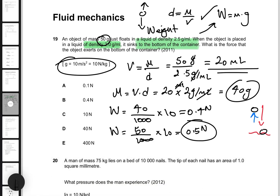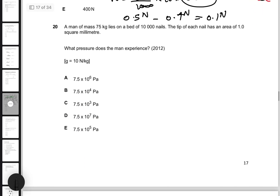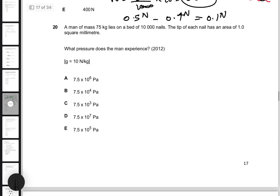To find the force the object exerts on the bottom of the container, you subtract the two forces: 0.5 Newtons minus 0.4 Newtons gives 0.1 Newtons, which makes choice A the correct answer.